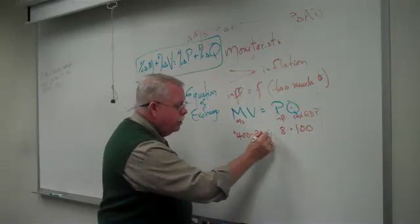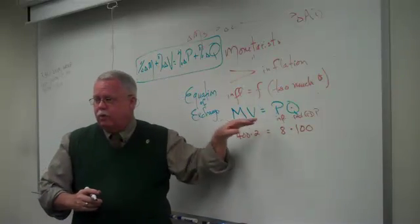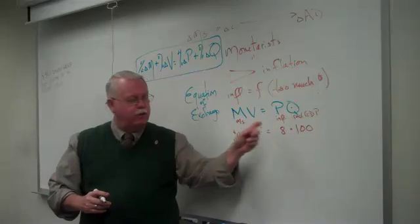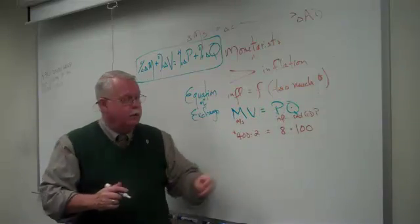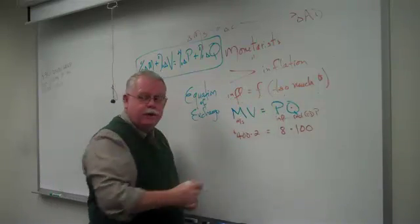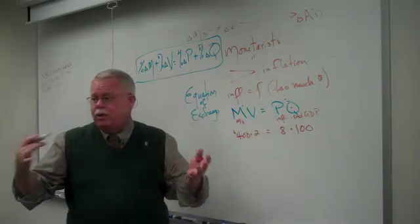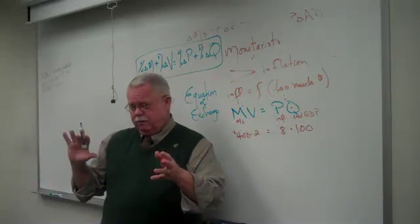400 times 2. So this is an identity, this equation. It's always true. These are equal because of the way we define the terms. Total spending equals total spending. Total spending equals GDP. Same thing.